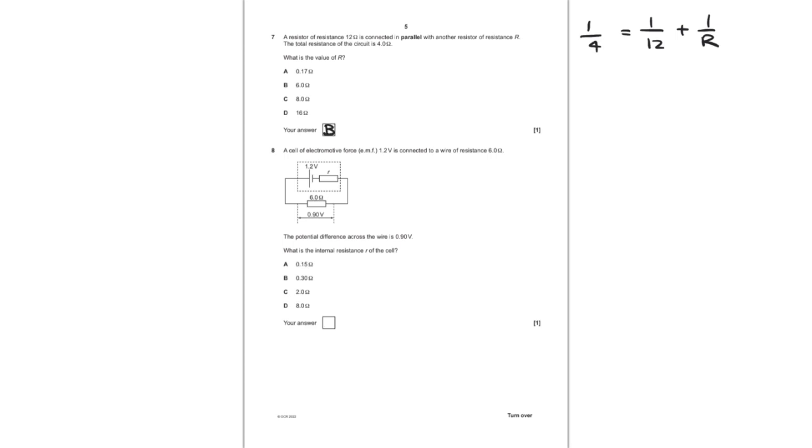Let's move on to question number eight. We have a cell of EMF 1.2 volts, which is connected to a wire of resistance 6 ohms. The potential difference across the wire is 0.9 volts. What is the internal resistance of the cell? We know using the formula of EMF equals V plus IR, where little r is the internal resistance. EMF minus V over I is R. All we have to work out is the value of I, the current. Because this is only one component and it's series, the current can be calculated using this combination of 0.9 volts over 6 ohms. That gives me 0.15 amps of current. Therefore, the calculation is straightforward. EMF is 1.2 minus 0.9 over 0.15, which ends up giving me 2 ohms. And C is therefore my answer.